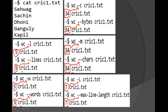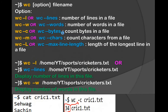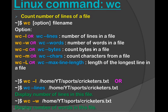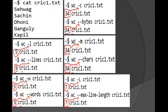Now wc -c filename: we use -c because it is used to count bytes in a file. We can also use --bytes. To count the number of bytes in a file we can use wc -c. When we press Enter, we can see the number of bytes available in this file.